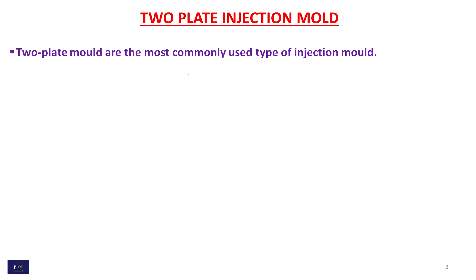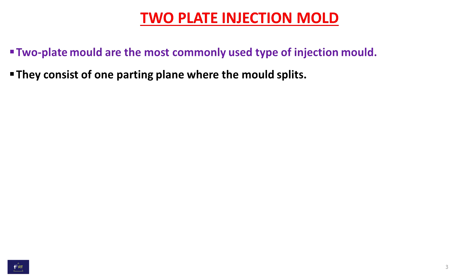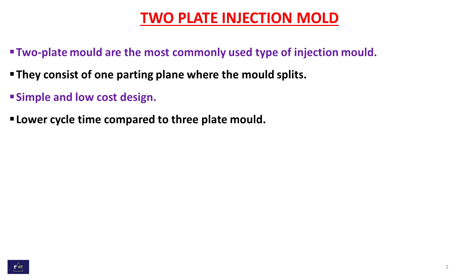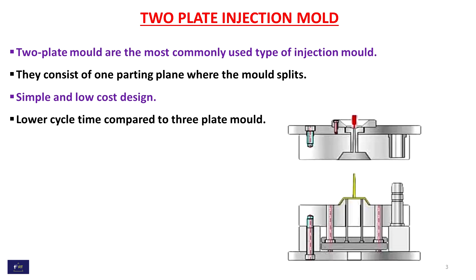2-plate injection mold. 2-plate molds are the most commonly used type of injection mold. They consist of 1 parting plane where the mold splits. Simple and low cost design. Lower cycle time compared to 3-plate mold. This is the simple image of the 2-plate injection mold.